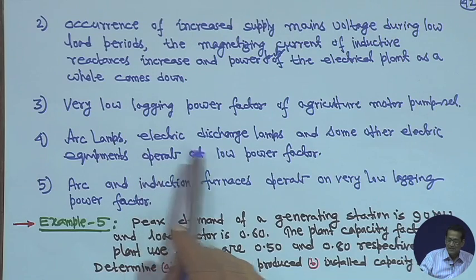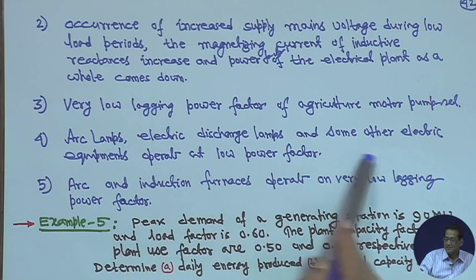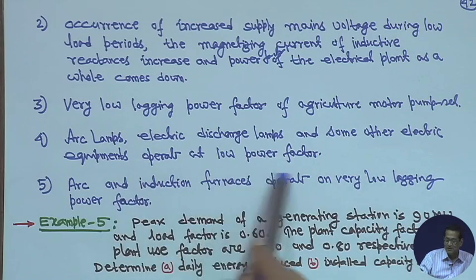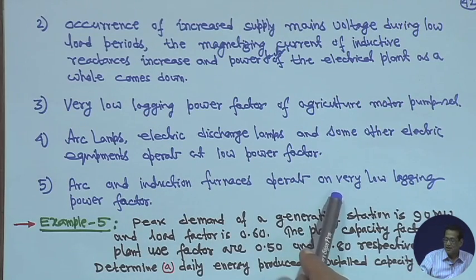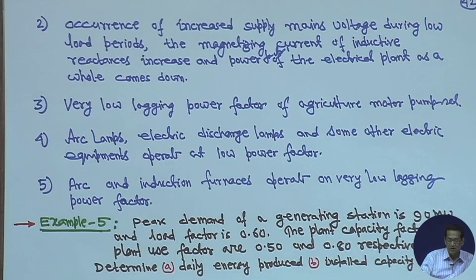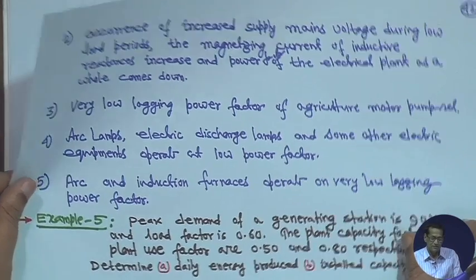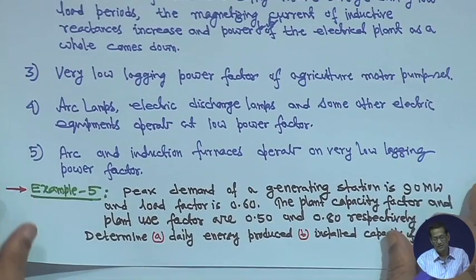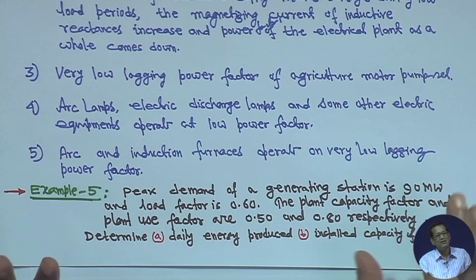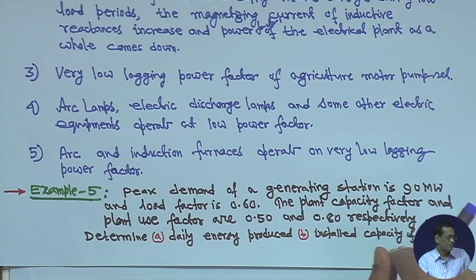Arc lamps, electric discharge lamps, and some other electrical equipment operate at very low power factor. Arc and induction furnaces operate on very low lagging power factor. These are some of the common reasons for low power factor.